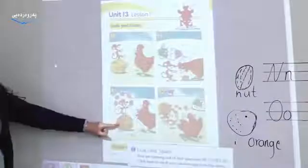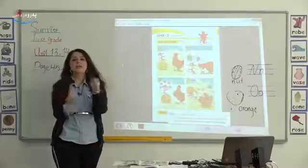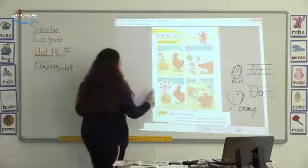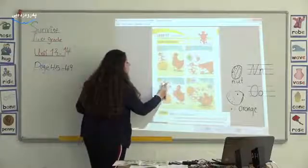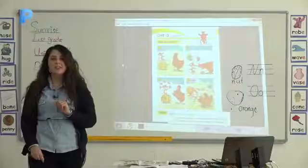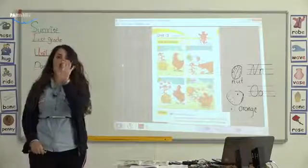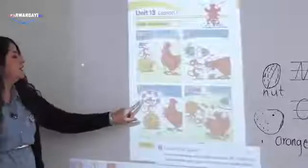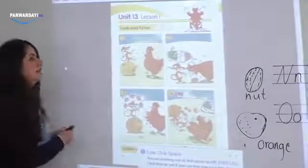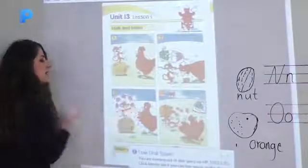The third picture — the mouse plays with the nuts. He has — how many nuts does he have? One, two, three, four, five. In English: one, two, three, four, five.